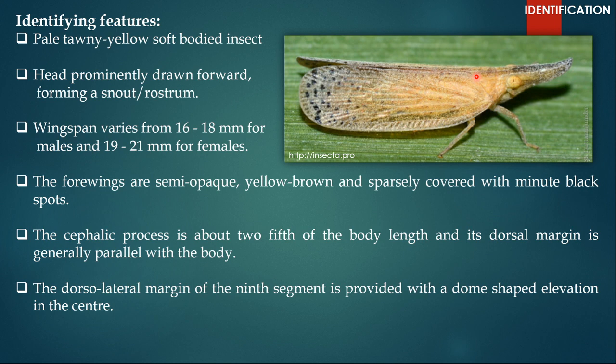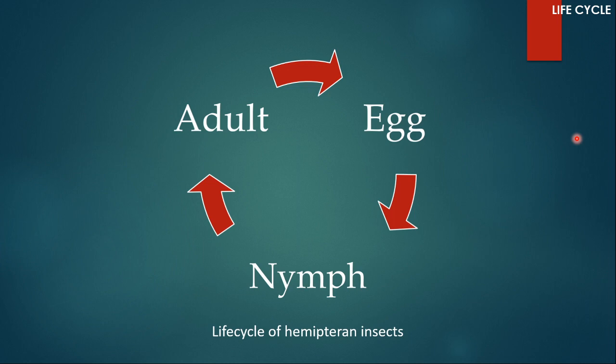The dorsolateral margin of the ninth segment is provided with a dome-shaped elevation in the center, which you cannot see in this picture. But if you stretch the wings and expose the abdomen, then you would see a dome-shaped elevation in the center of the ninth segment.